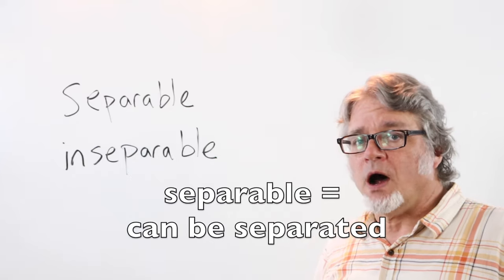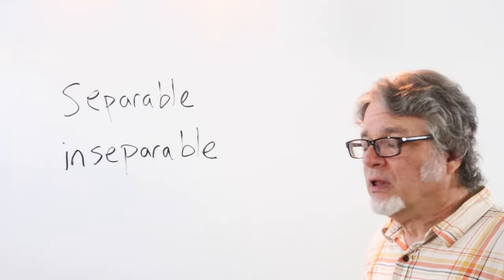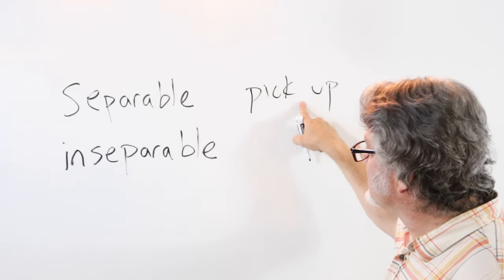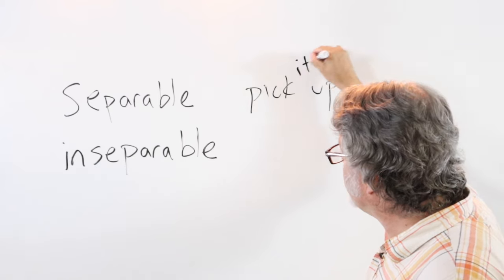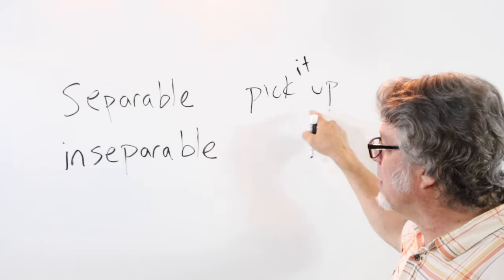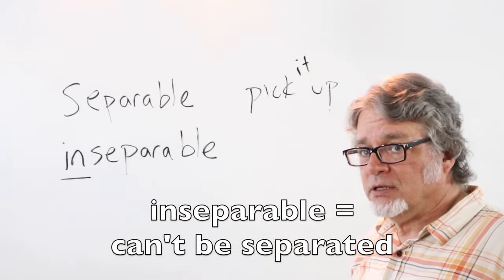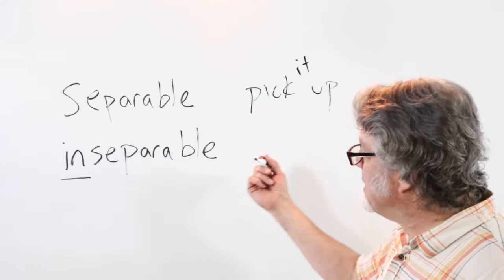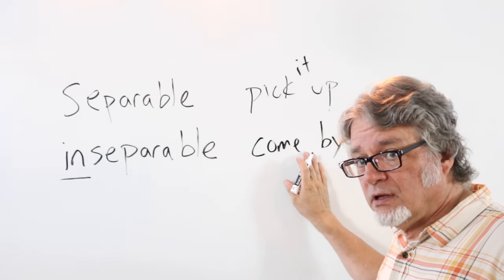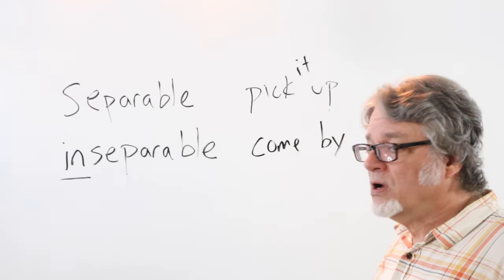Some phrasal verbs are separable. That means that they can be separated by other words. For example, pick up can be separated. I can put the pronoun it between pick and up: pick it up. But then some phrasal verbs are inseparable. This means that they can't be separated. An example of an inseparable phrasal verb is come by. These two words have to be used together. There is more than one meaning for come by, but whenever you see it you'll see these two words together.